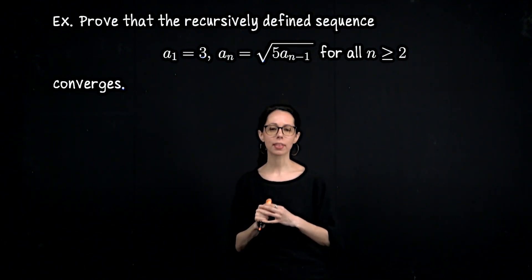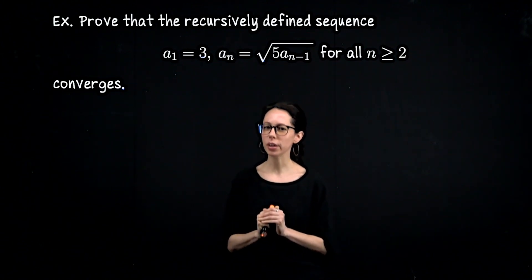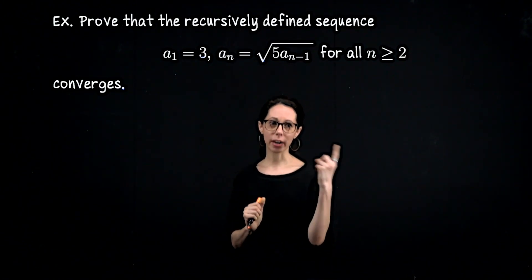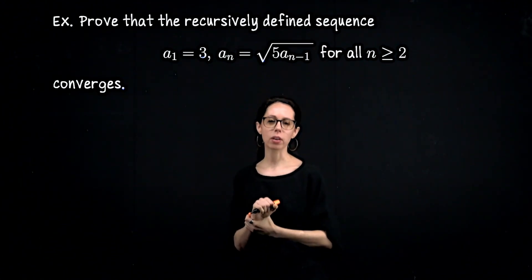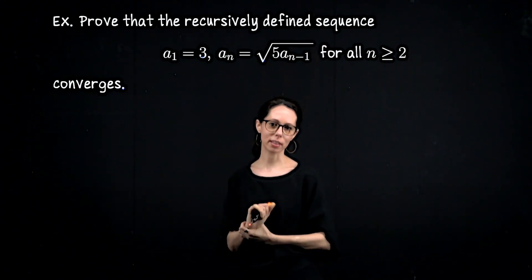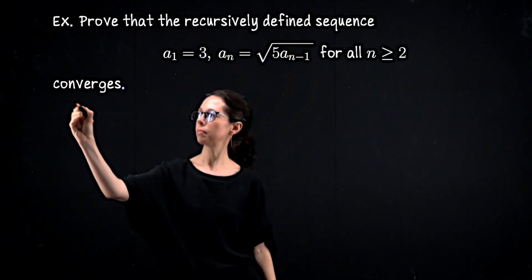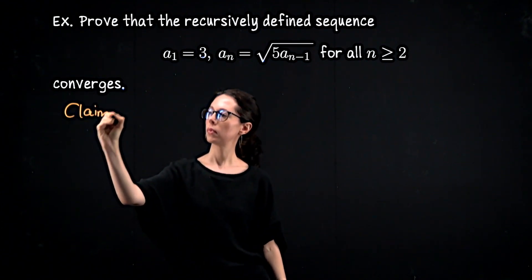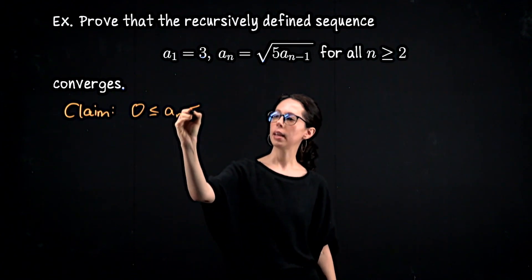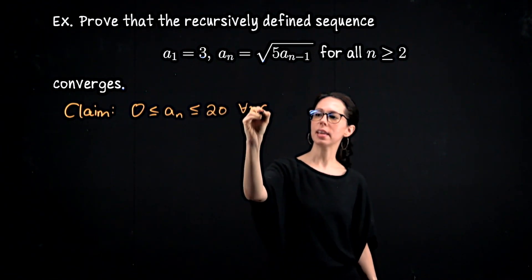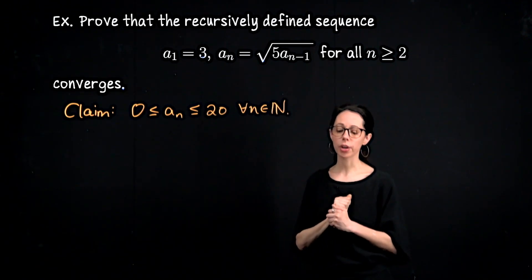First, let me prove this sequence is bounded. I'm going to show all sequence terms live between 0 and 20 — greater than or equal to 0 so the computation is valid, and 20 is a convenient upper bound computationally. It's by no means the least upper bound, but we just need to know it's bounded by something. My first claim is that 0 is less than or equal to a sub n, which is less than or equal to 20, for all indices n.